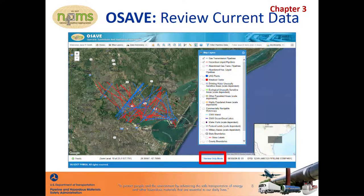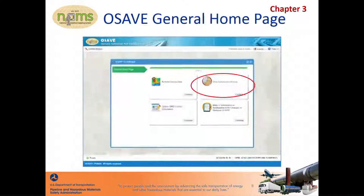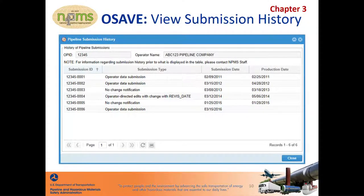Please note that since this data is the same data layer used in other NPMS map viewers such as PIMA and the public viewer, the pipelines in the gas transmission pipelines and the hazardous liquid pipelines layers have been segmented by NPMS staff on the county boundaries. Next, we're going to talk about the View Submission History tool. The View Submission History tool lists the pipeline submissions and notifications that NPMS staff has received for the OPID since 2010. The date when the submission or notification was incorporated into the internal version of the NPMS national layer is also displayed.